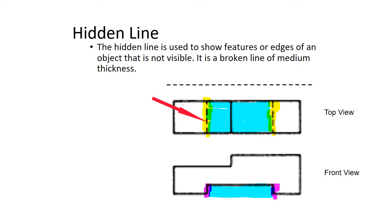We know the notch is there, but we can't see it. So we use a dashed line of medium thickness to represent that line, a feature that we can't see from that view. That's what we call a hidden line.